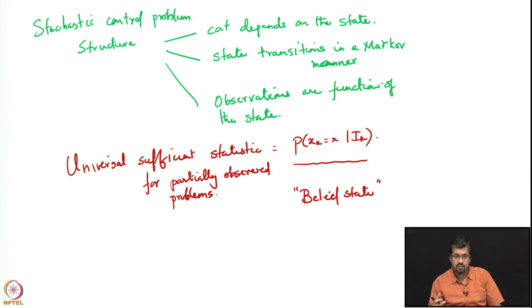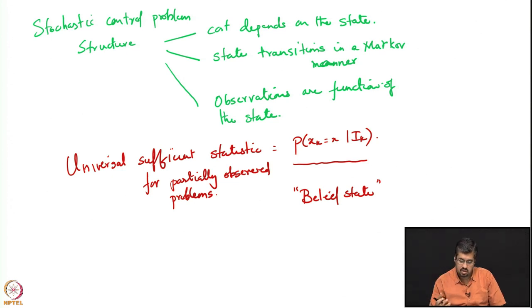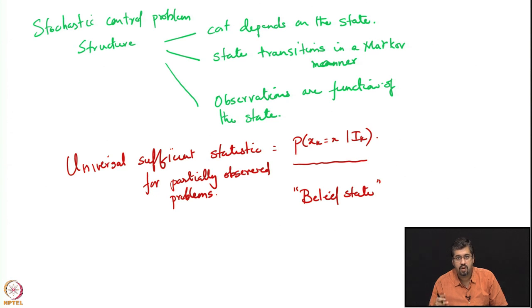We will now show that for an arbitrary partially observed problem, writing out the belief state allows us to show that the optimal action and optimal cost can be computed as a function of the belief state. As a result, the belief state becomes the sufficient statistic for this problem. This motivates the belief state formulation of a partially observed Markov decision process.